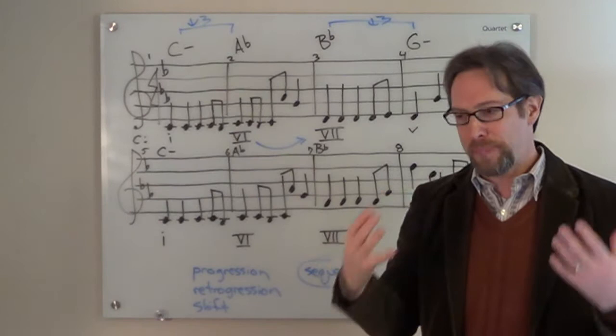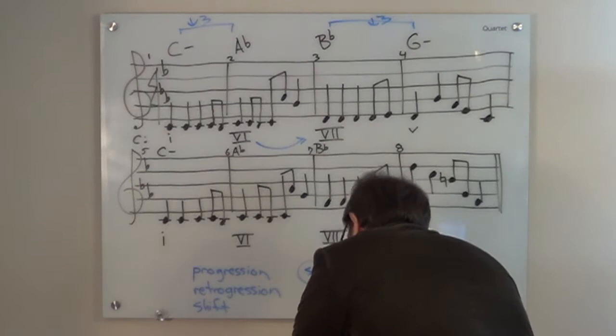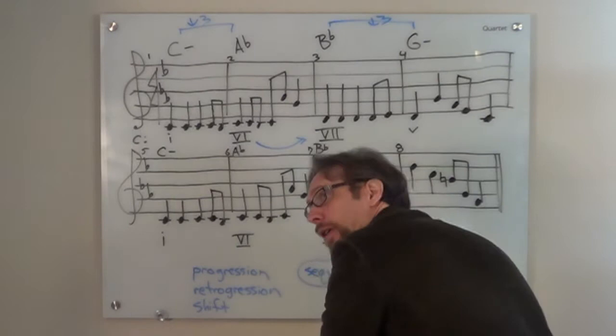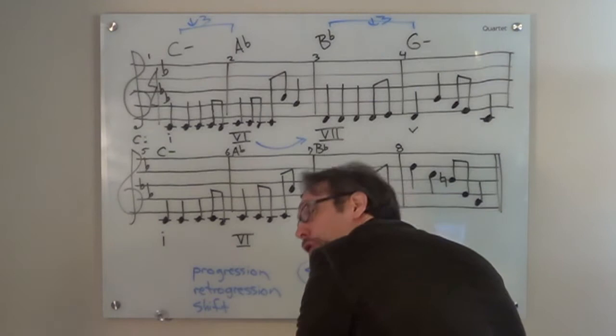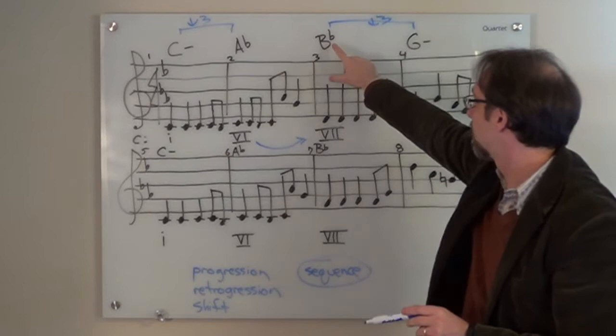And that pattern, the human ear will latch onto that pattern, and it will allow composers to override what the ear would normally want to hear as a progression. So, we get... Right? It's a sequence. We got C, A flat, B flat, G. And you get that sequence. So, sequence, shift, shift, up a major... or rather, down a major second, in the case of that initial movement. But we stay diatonic.